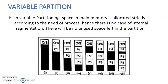The next one is variable partition. In this, the space in main memory is allocated strictly according to the need of the process, so there is no case of internal fragmentation. What is internal fragmentation? It is a disadvantage of the fixed partition. In internal fragmentation, if a partition is of 100K and it has to be allocated to a process of 18K, then 20K of memory is wasted. This is called internal fragmentation.